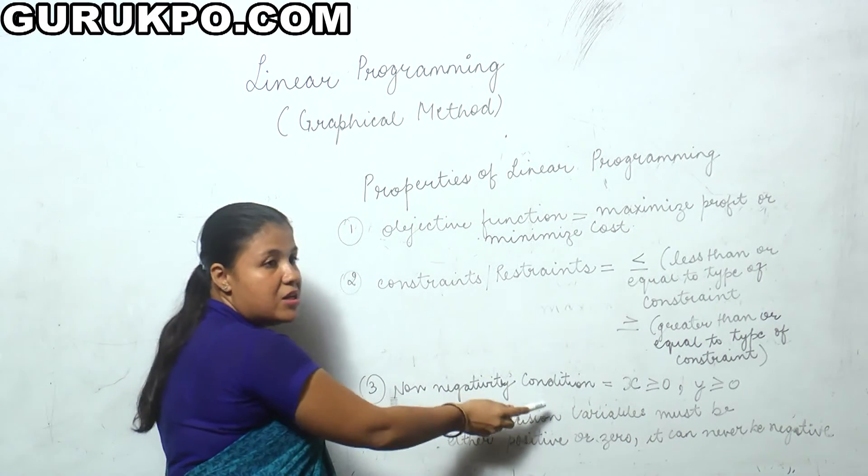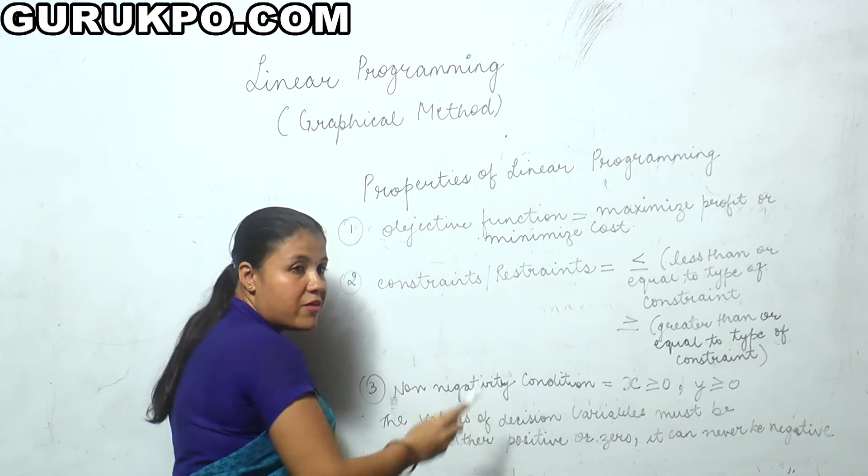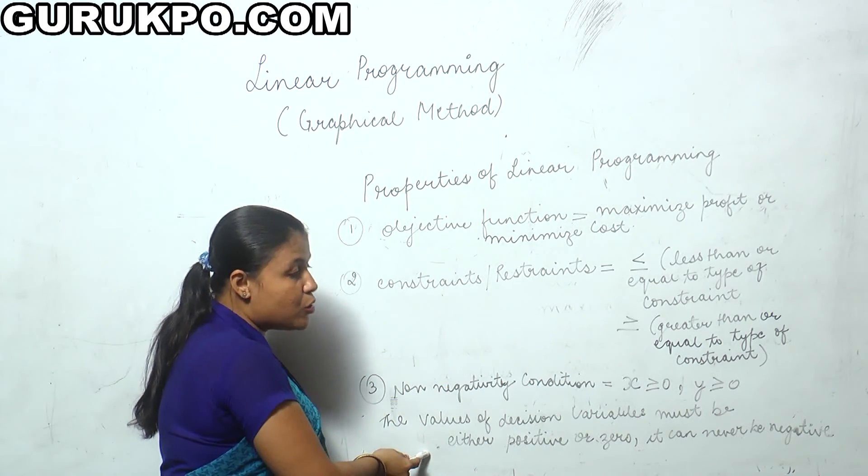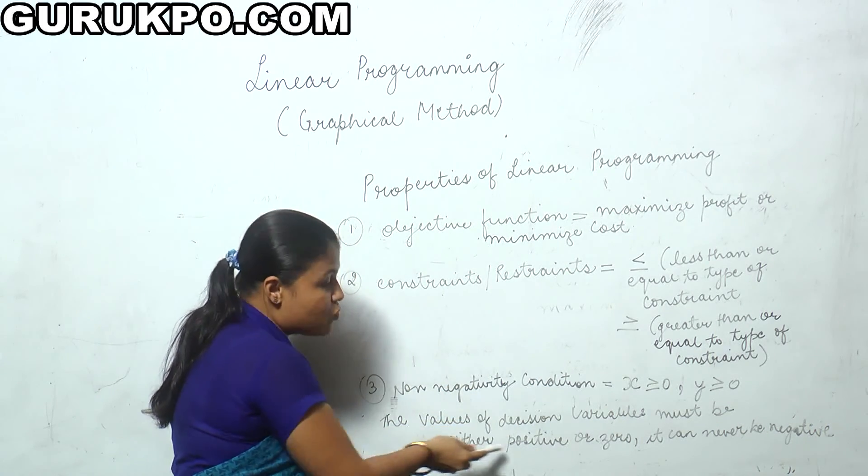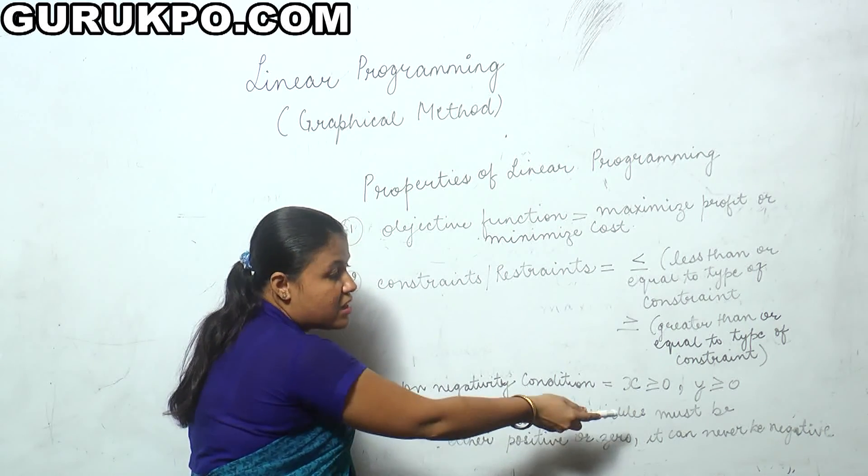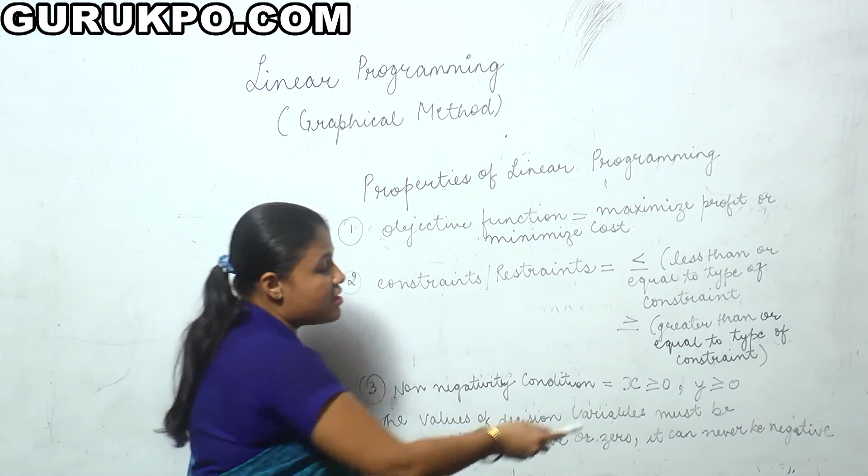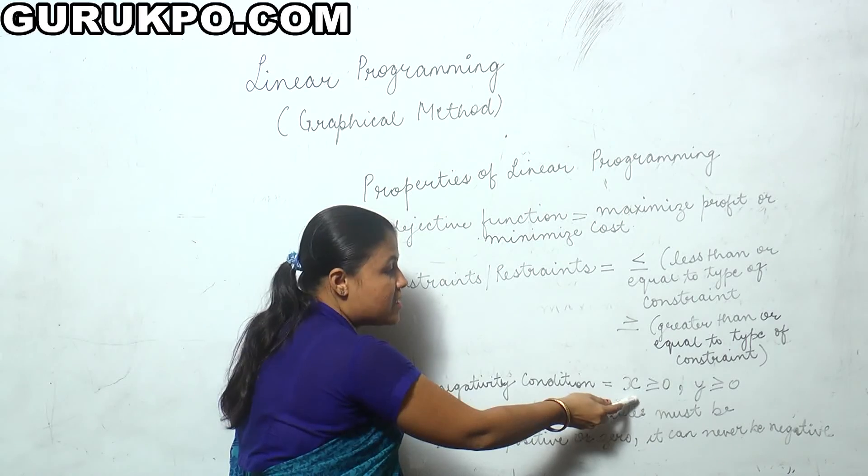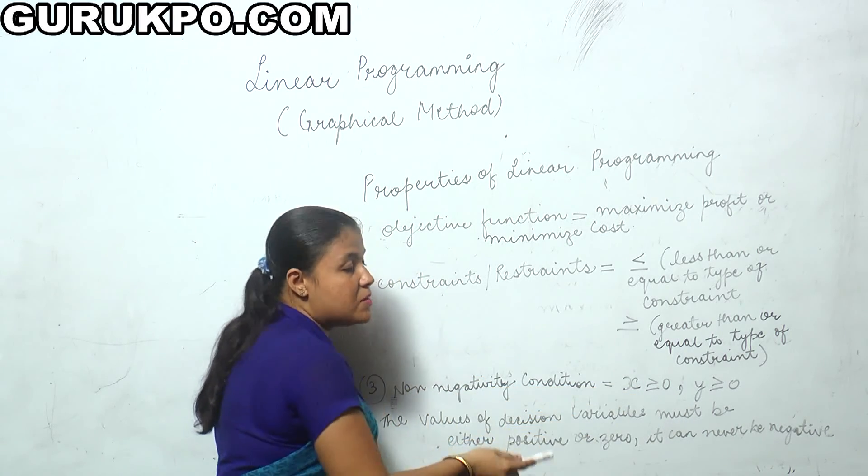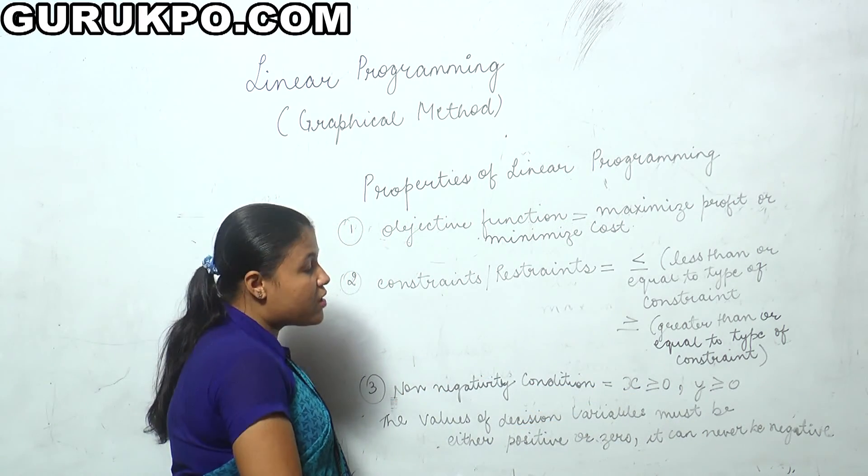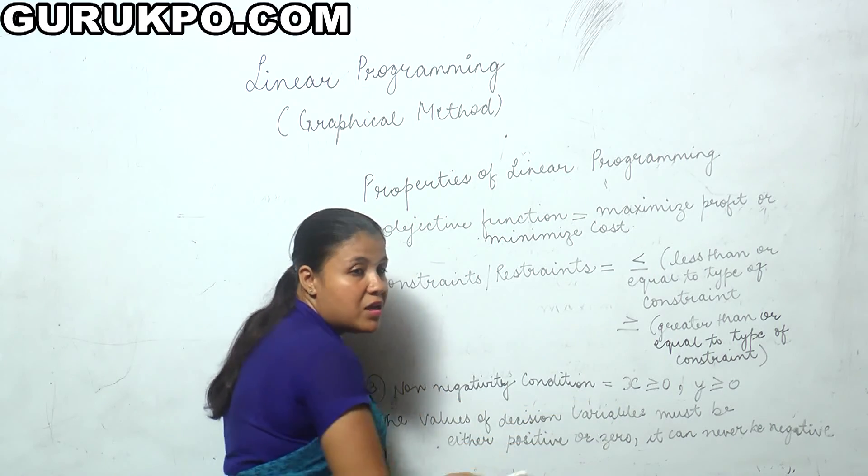The third is non-negativity condition. Whatever decision variables we take should be equal to 0 or positive, but can never be negative. For example, if we have two variables x and y, both can be 0 or positive but never negative.